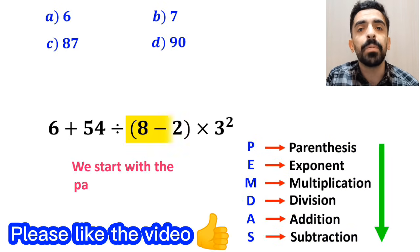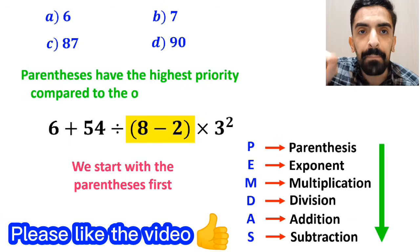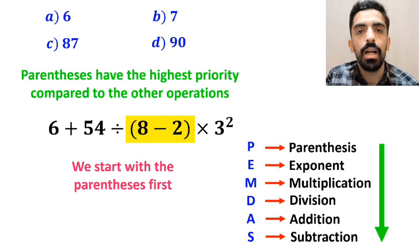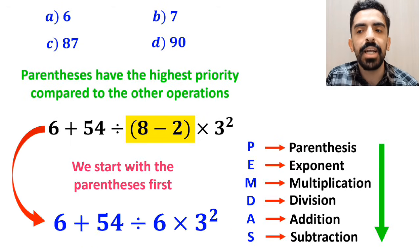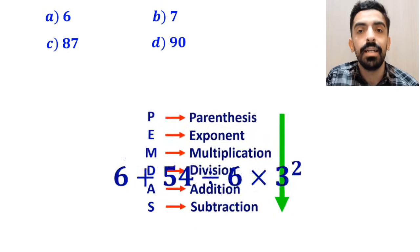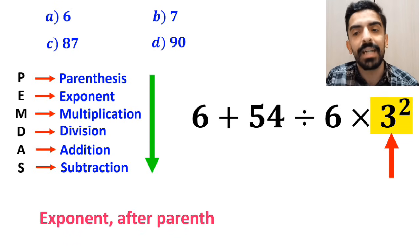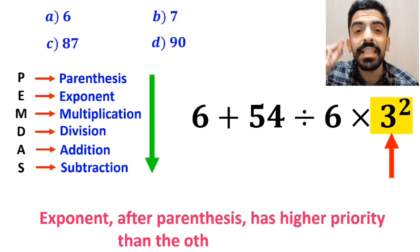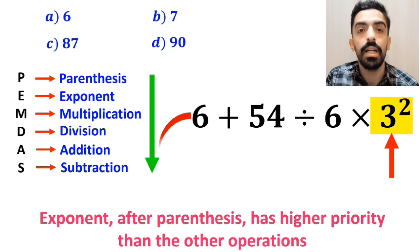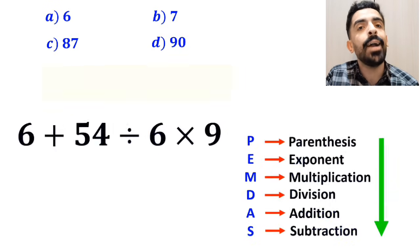So we will start with the parenthesis first, because parenthesis have the highest priority compared to the other operations. Instead of this expression, we can write 6 plus 54 divided by 6 times 3 to the power of 2. In the next step, we go to the exponent, because exponent after parenthesis has higher priority than the other operations. So this expression simplifies to 6 plus 54 divided by 6 times 9.